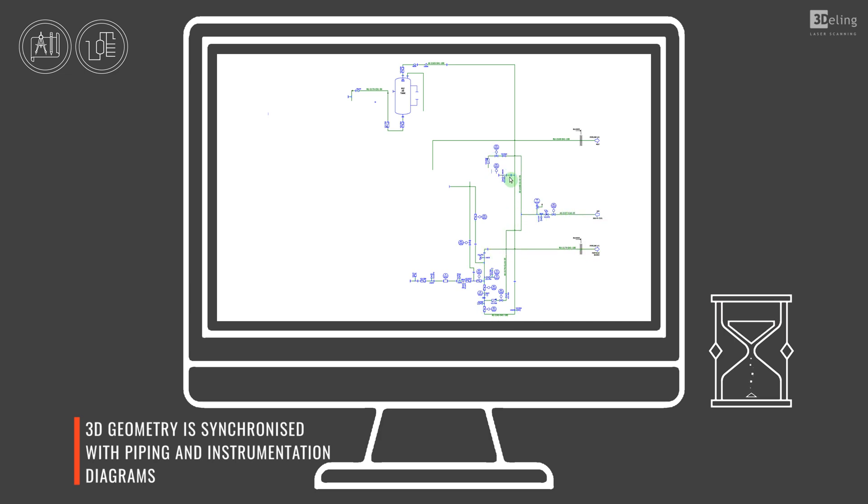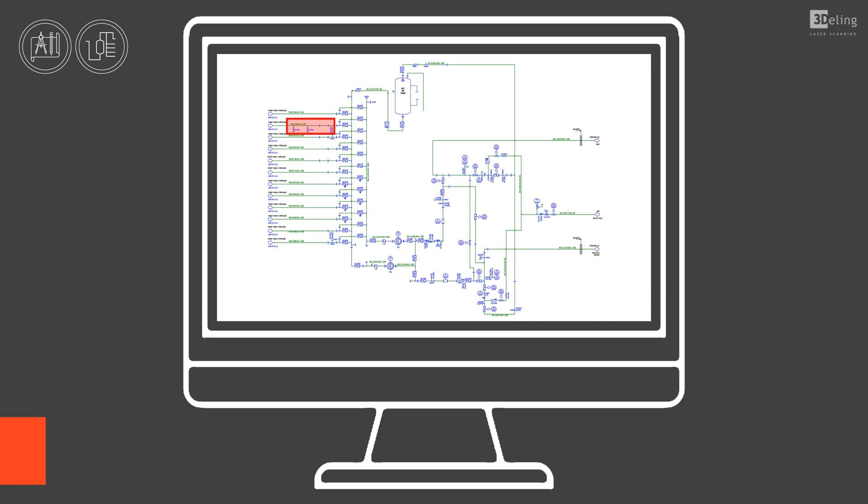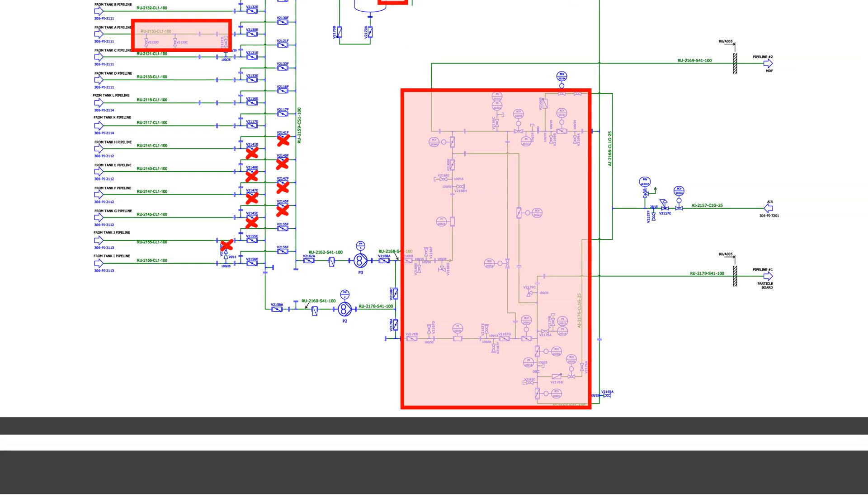Piping and instrumentation diagrams are laid out in two dimensions and incorporated into the comprehensive digital model. It is essential to ensure consistency between both the two-dimensional and three-dimensional representations of the piping system.